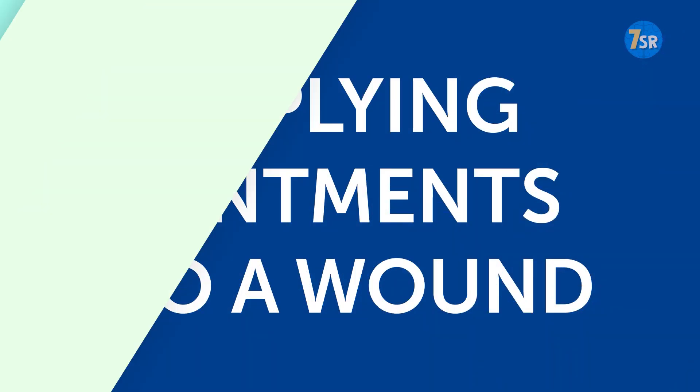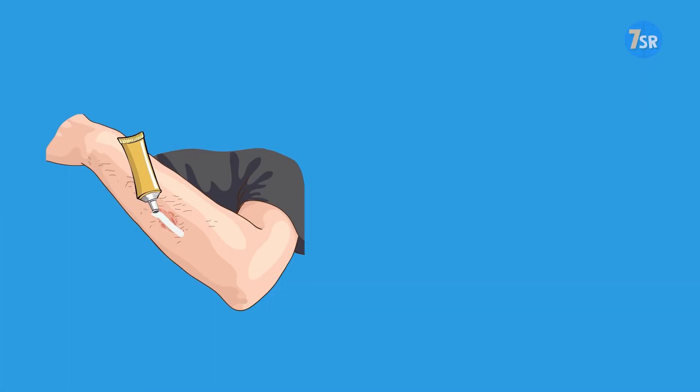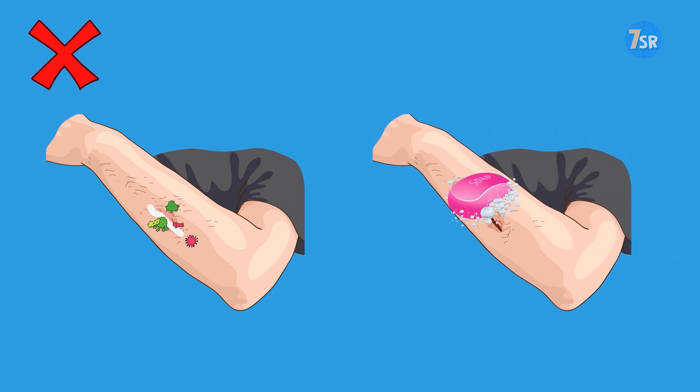Applying ointments to a wound. Ointments contain unwanted moisture, which is a great environment for bacteria to reproduce more quickly. The best thing you can do is clean the wound in cool water with soap and put a dry bandage on it. You will see that the wound will heal more quickly.